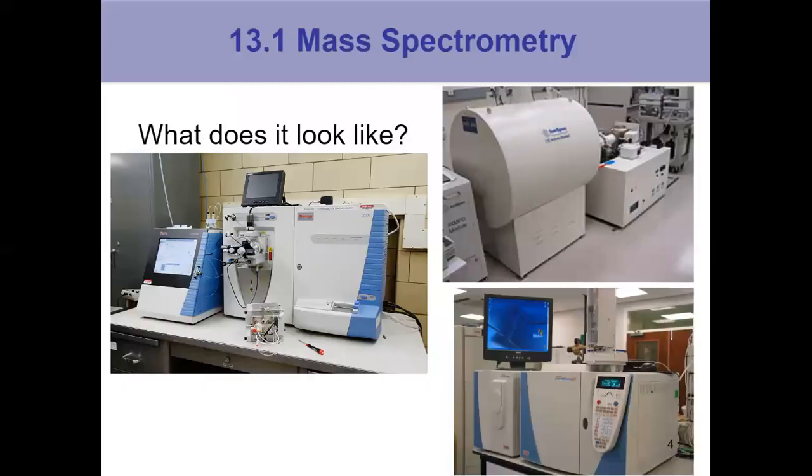So we've got mass spec first. Here's a couple of images that aren't in the textbook to show you what the instrument actually looks like if you were to see this in a lab. We are studying mass spectrometry. The instrument is called a mass spectrometer.